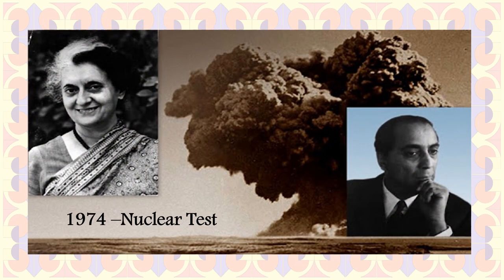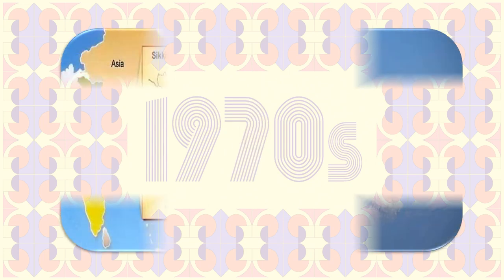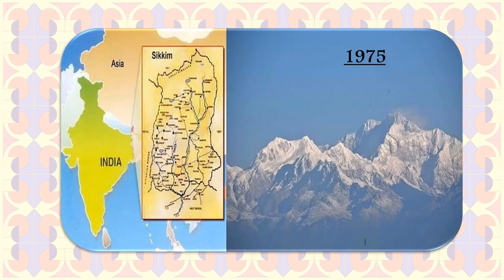India conducted its first nuclear detonation, described by India as a peaceful nuclear explosion, on 18th May 1974. A referendum on abolishing the monarchy was held in the Kingdom of Sikkim on 14th April 1975. It was approved by 97.55% of voters and resulted in the country becoming an Indian state.